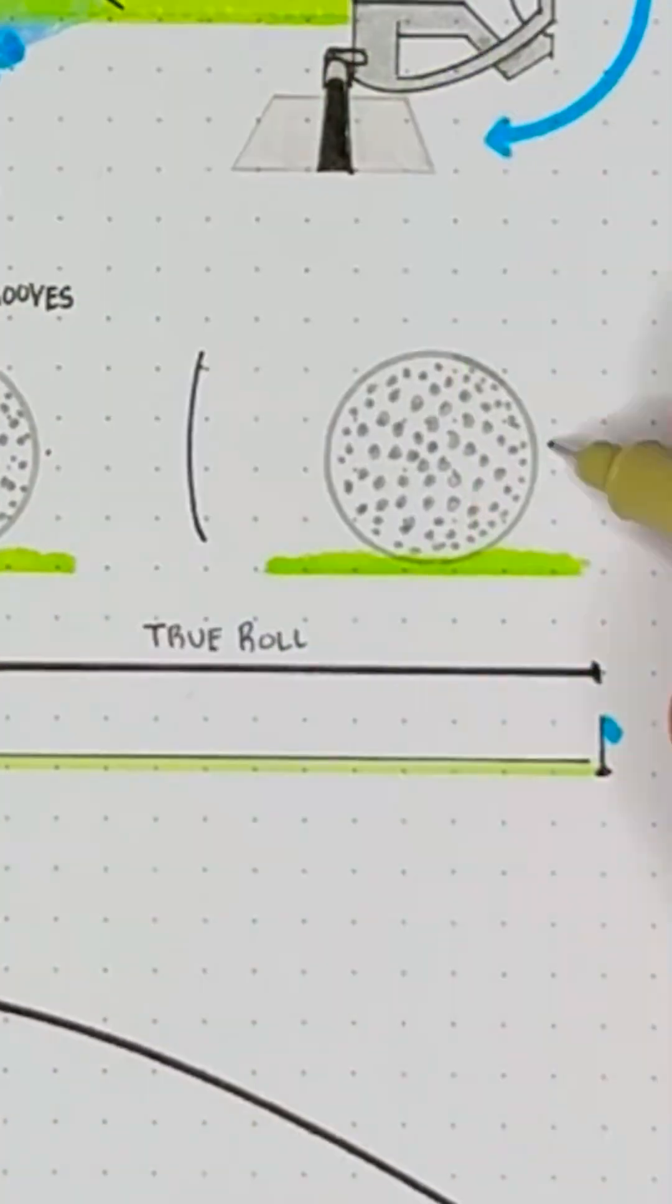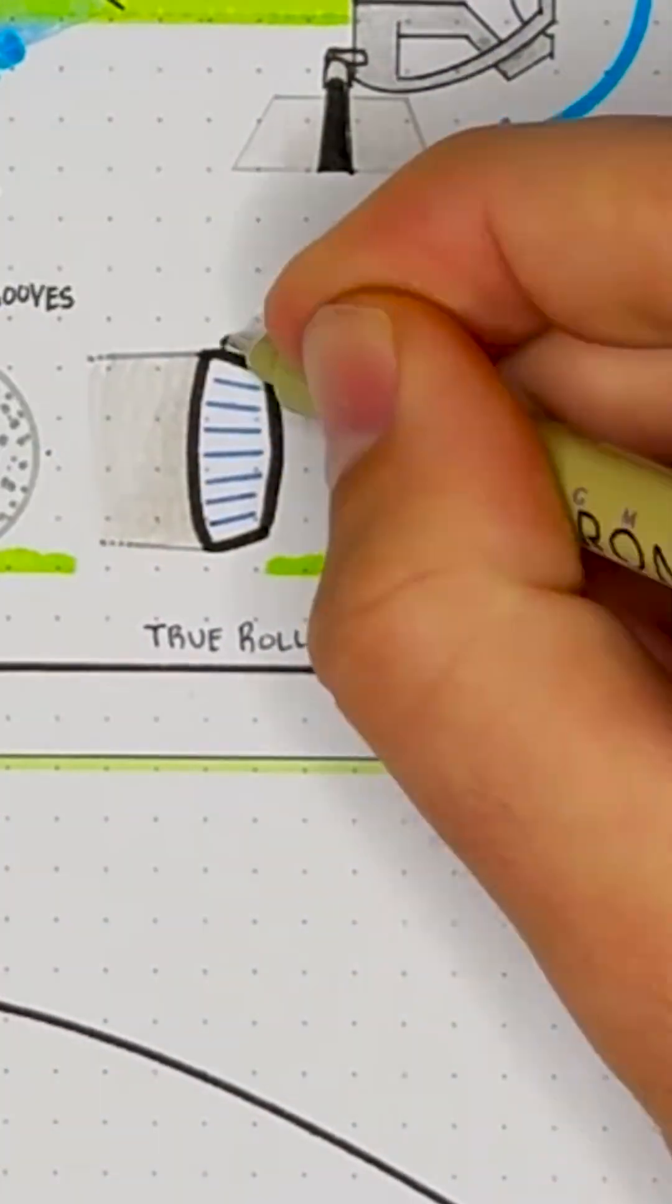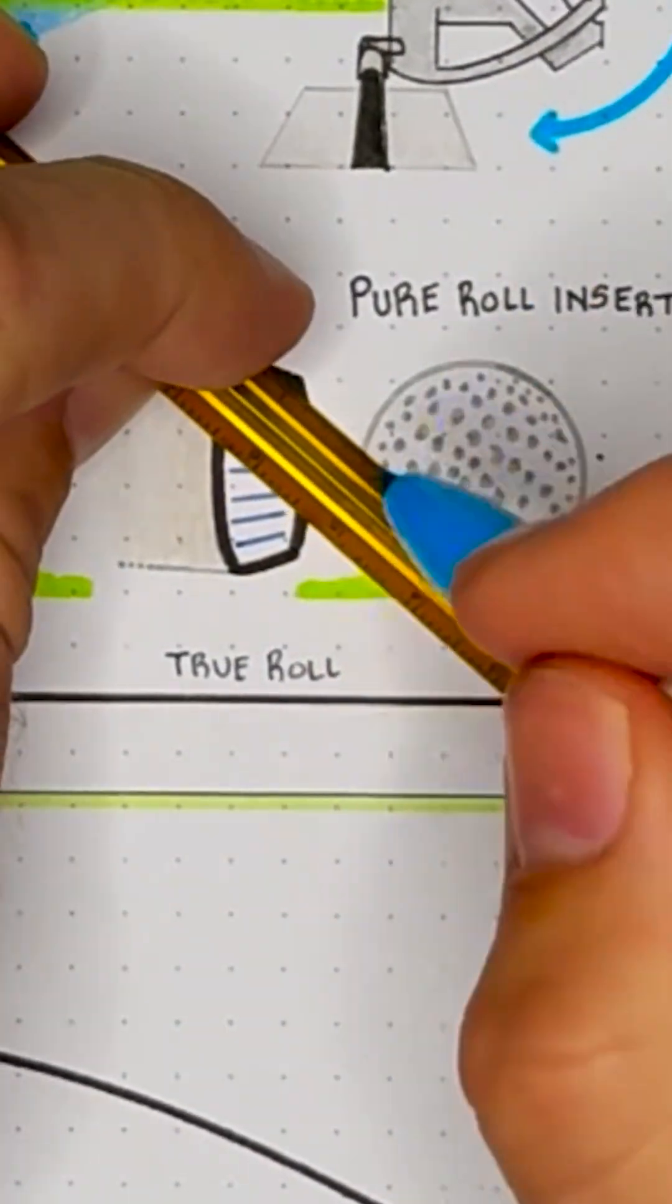To fix this, we developed the pure roll insert. At a glance, it just looks like grooves on a face, but if you zoom in, you'll see that they're actually angled beams.